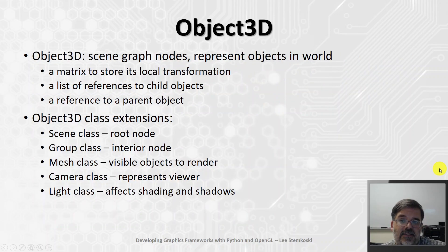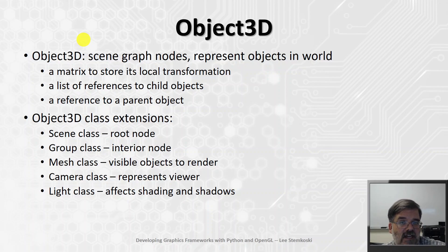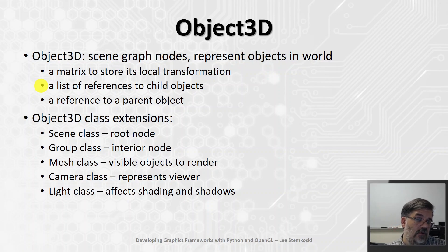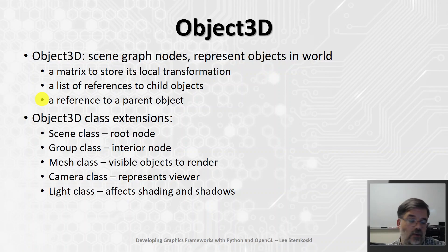In terms of classes, the most basic class we're going to have in our structure we'll call Object3D. That's going to represent the nodes in our scene graph, or equivalently the different kinds of objects we have in our world. Object3D will store three main pieces of information: a matrix to store its local transformation relative to its parent, a list of references to the child objects — which could be empty if there are no children — and a reference to its parent object, or in the case of the root, there will be no parent object.